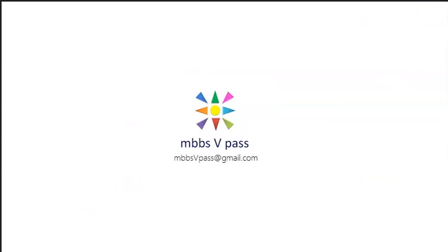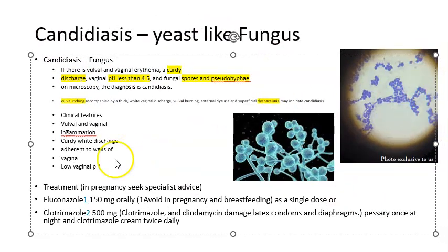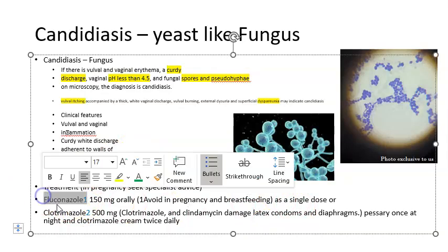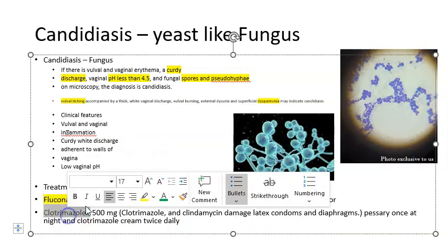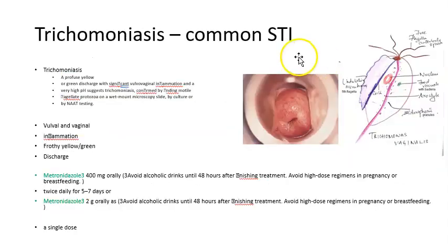So for candidiasis, the treatment is antifungals — fluconazole or clotrimazole. Just remember the drug names. Key features: curdy discharge, low pH (less than 4.5), spores and pseudohyphae on microscopy, and vulvovaginal erythema.